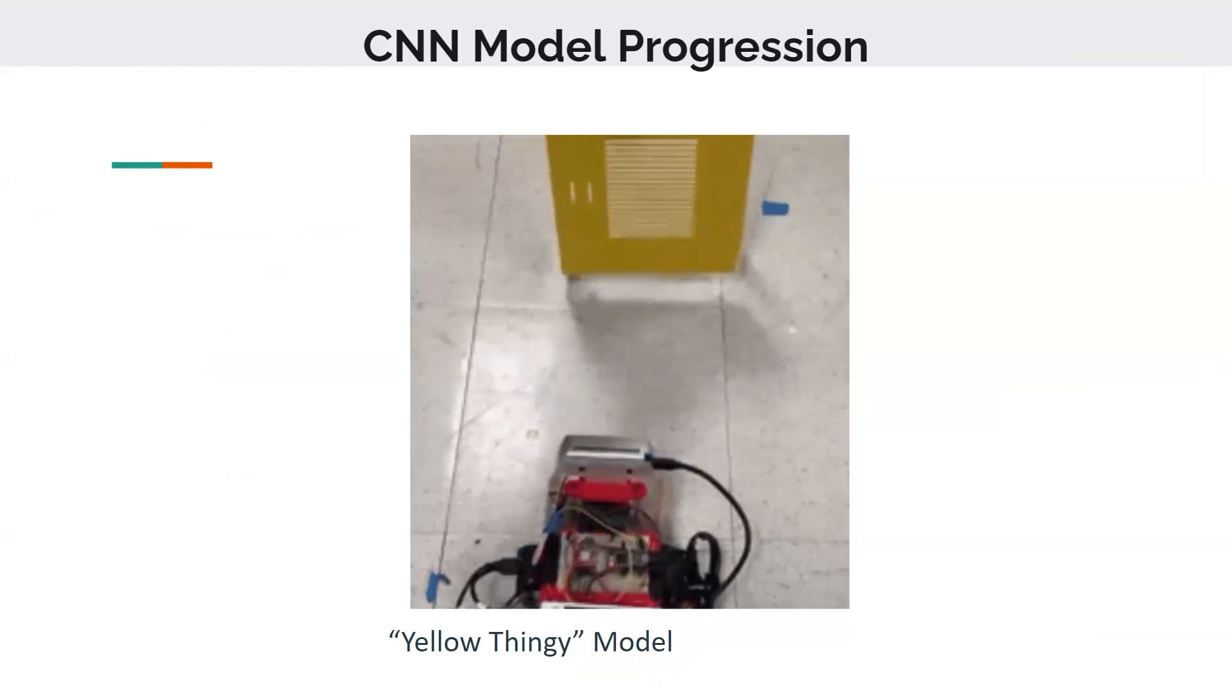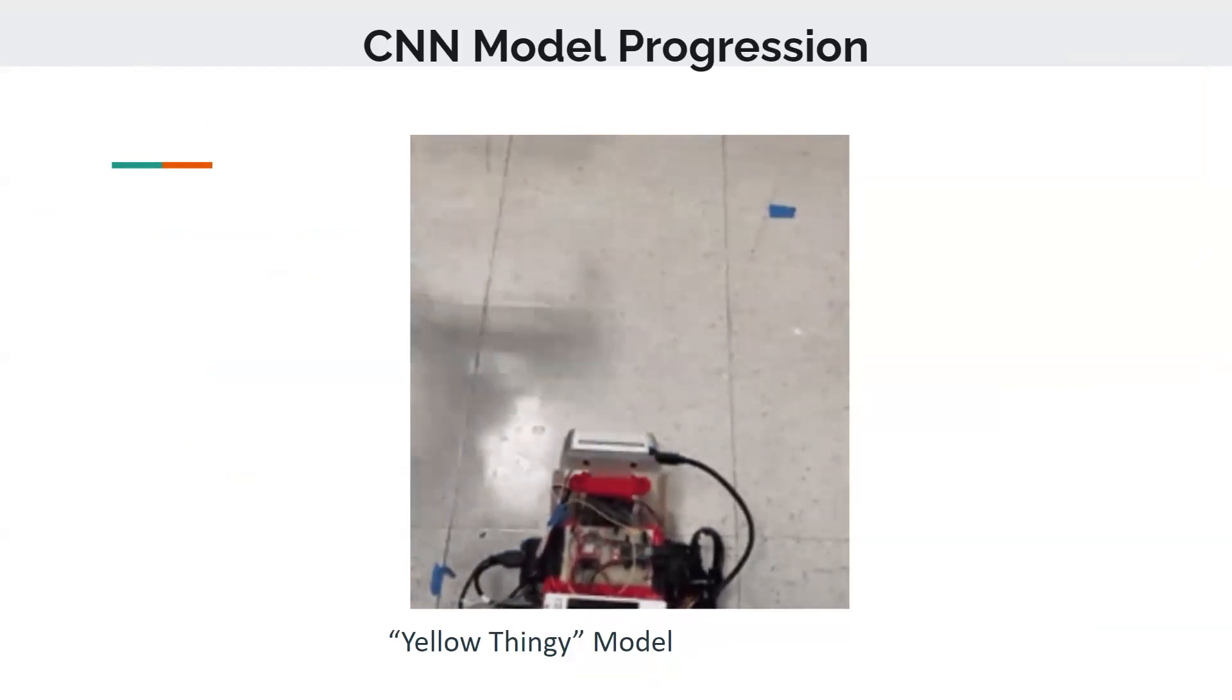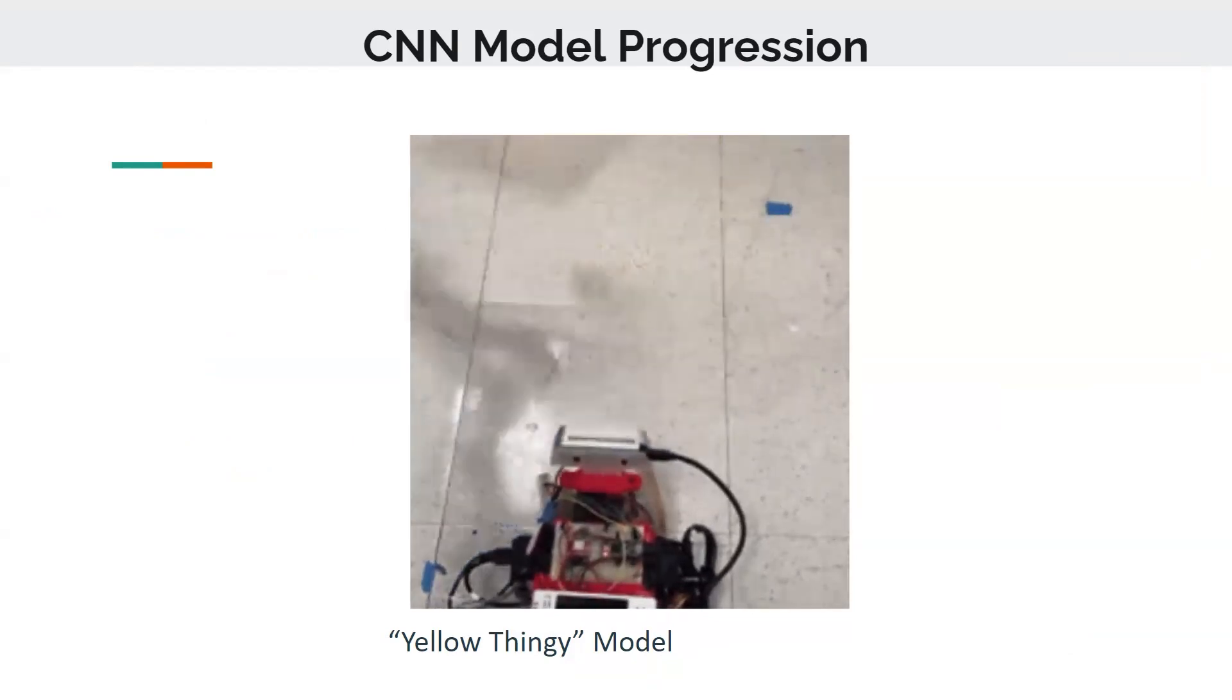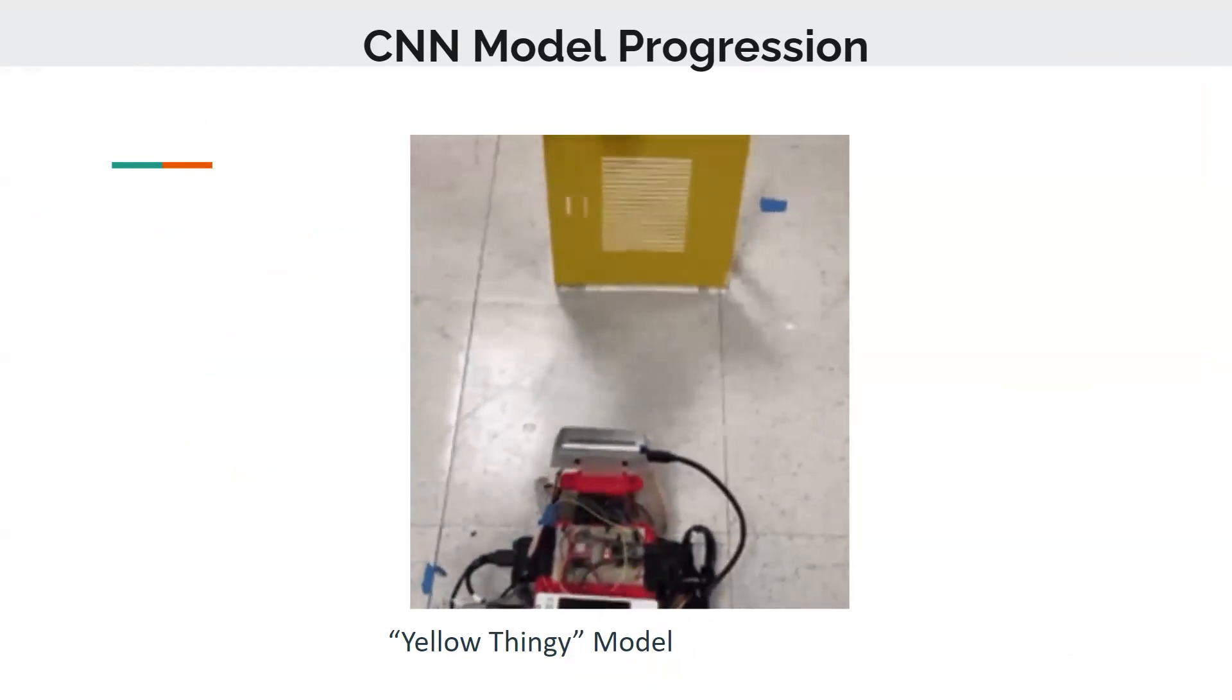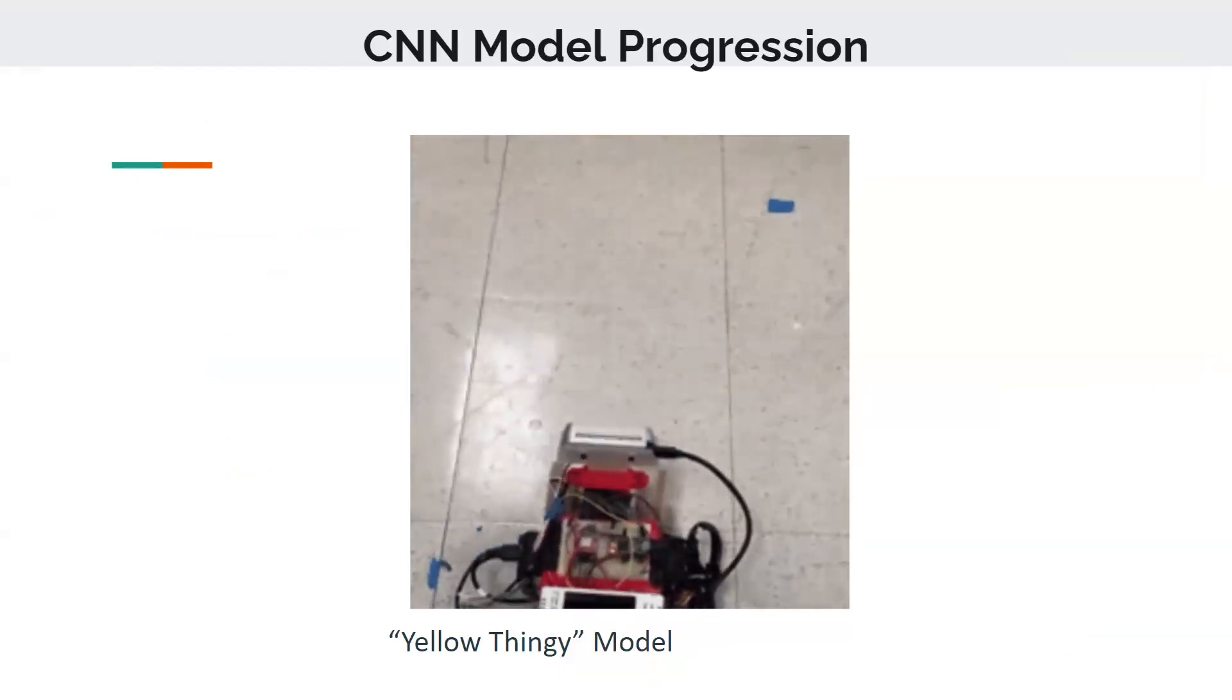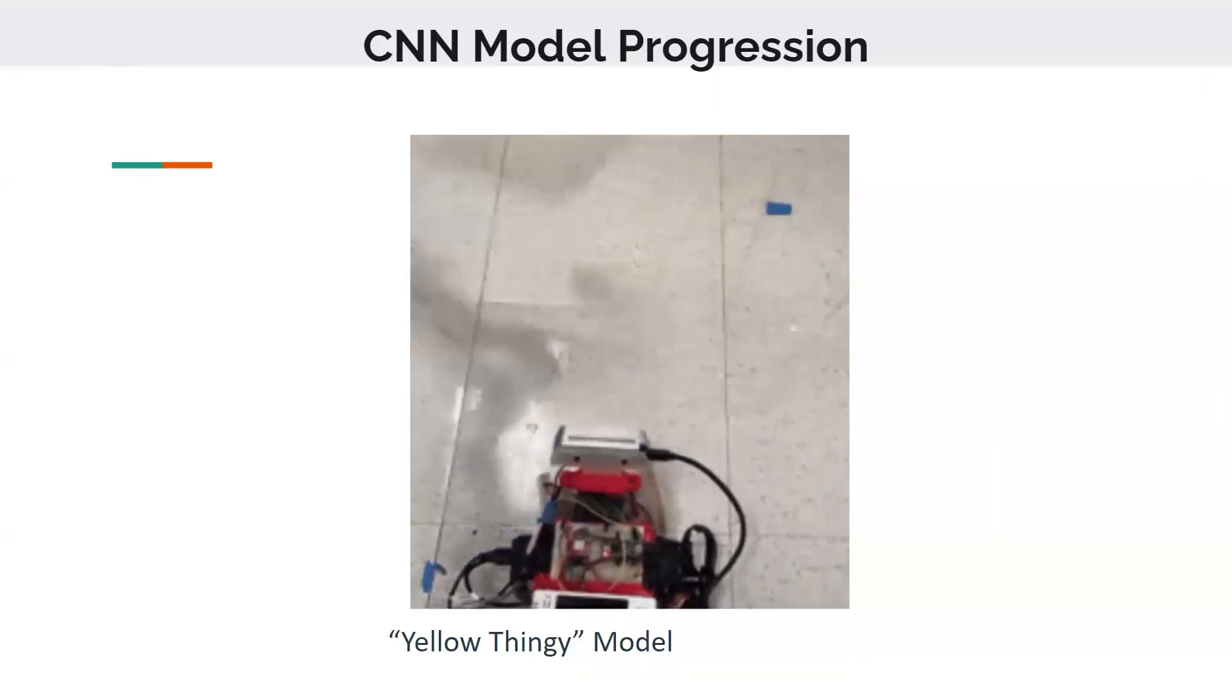Alright, so now that we basically recorded and edited our bags, we're ready to actually start training. So we went with a convolutional neural network, basically a kind of algorithm for machine learning. And the reason we're using a convolutional one is so it's easier, it's more effective to process images.